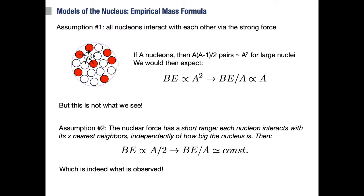If there are A nucleons, then there are A times A minus one half pairs. So two nucleons, then one pair; three nucleons, then we have three pairs; four nucleons, we have six pairs, and so on. In this case, A times A minus one halves for large numbers becomes roughly A squared. So then the binding energy also becomes proportional to A squared, or equivalently, the binding energy per nucleon becomes proportional to A.